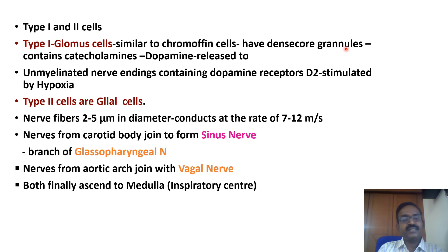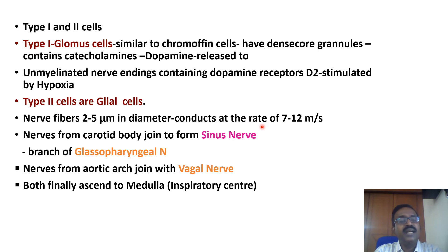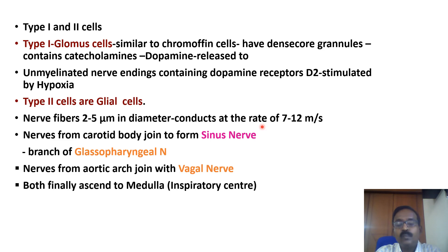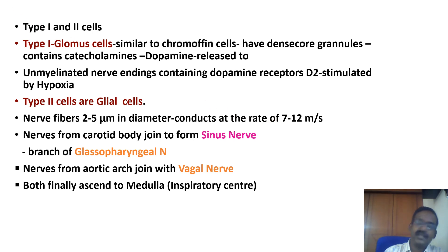Nerve fibers are 2 to 5 micrometers in diameter and conduct at a rate of 7 to 12 meters per second. Nerves from the carotid body join to form the sinus nerve, a branch of the glossopharyngeal nerve. Nerves from the aortic arch join with the vagus nerve, and both finally ascend to the medulla's inspiratory center, which responds to hypoxia.